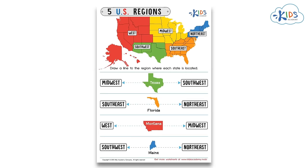Read the directions. Draw a line to the region where each state is located. Look at the first row. This is the state of Texas. Is Texas located in the Midwest region or the Southwest region? Correct! Texas is part of the Southwest region. Nice work!